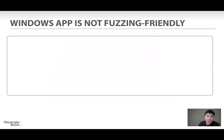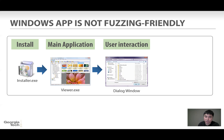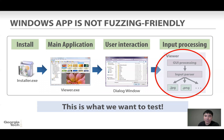Let's assume one scenario. You are a Windows user and you want to view an image using an image viewer. What you have to do first is download and install the program. Then click the icon and you will see the GUI. You can make interactions with the program, like clicking an icon to pop up a dialog window, then specify the file location. Once you tell the file location, the program will begin processing the data, like parsing it. That last part is the one we wanted to test, but there are several challenges to reach that point.